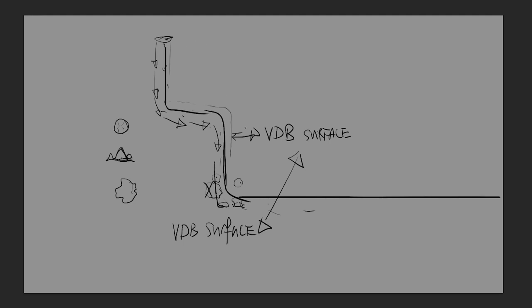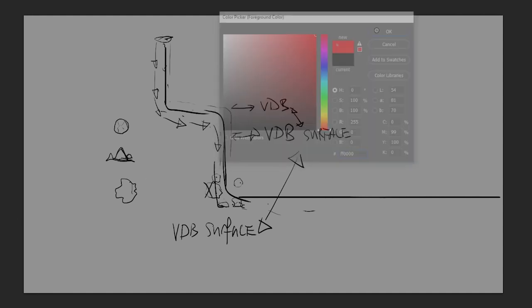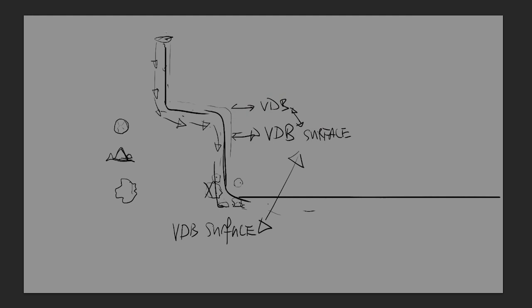We'll also use the pipe geometry as a VDB collision to keep particles inside the tube. We will generate the pipe geometry, turn it into a VDB surface, and subtract anything outside the tube surface, so whatever is outside gets erased using a minus operation. This leaves us with the nice bubbly action within the tubes. The collision is also important to get a more believable motion — if particles hit against the wall and come back, it makes for a more convincing effect.